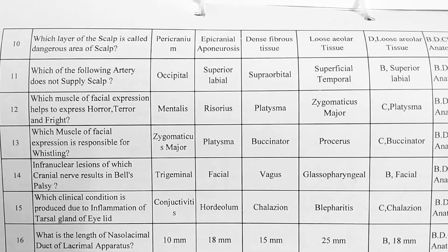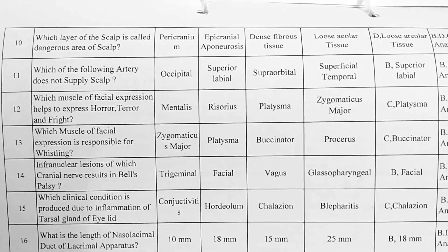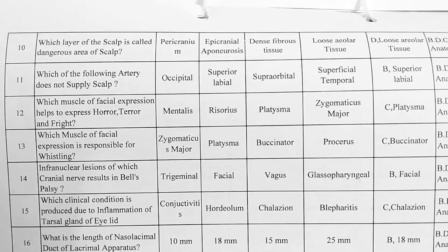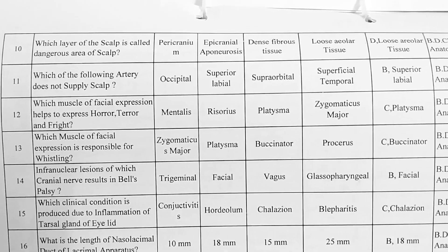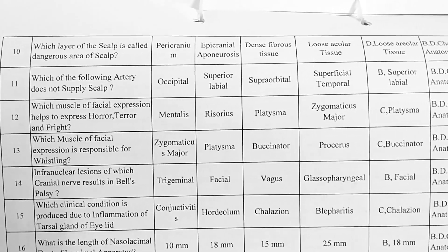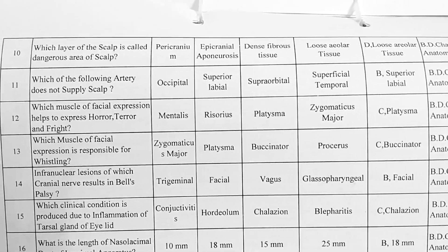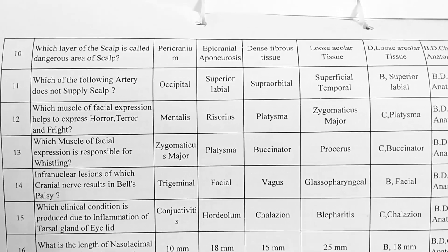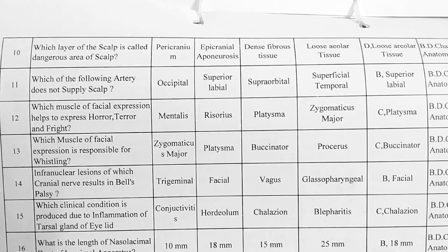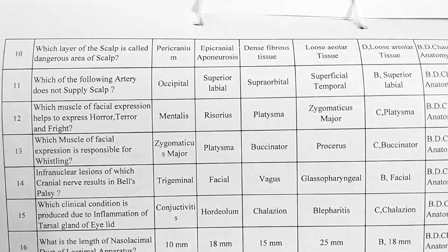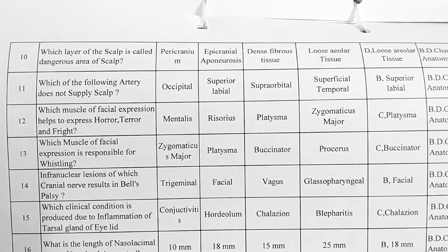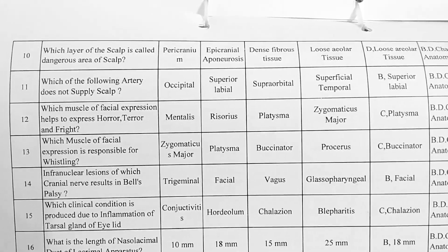Next. Which layer of the scalp is called the danger area of scalp? Options — A: pericranium, B: epicranial aponeurosis, C: dense fibrous tissue, D: loose areolar tissue. Option D is correct, loose areolar tissue.